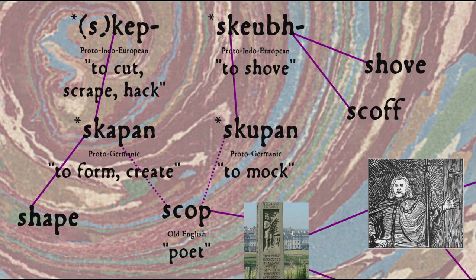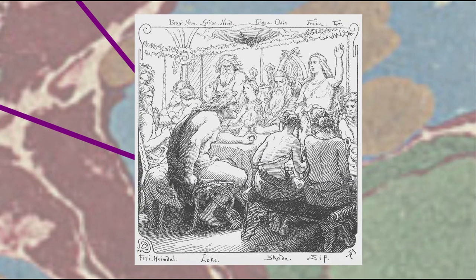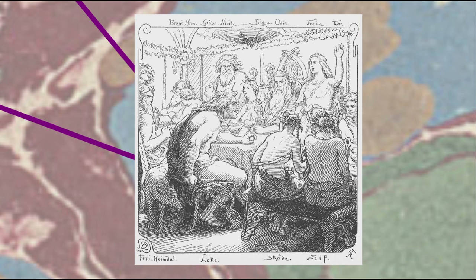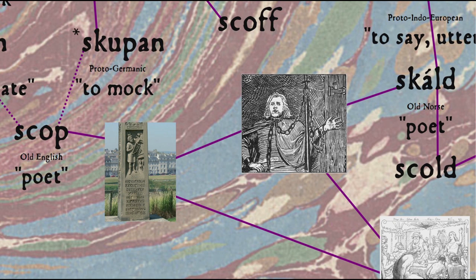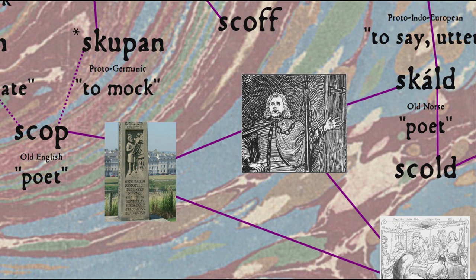And it's that second cognate that's the key here, as one of the uses of poetry in the Germanic tradition was for dishing out insults — so scoffing or mocking. We can also see this in the Old Norse word for a poet, skald, which gives us the English word scold, and comes from the Proto-Indo-European root sekwa, to say or utter. In the hands of a good shope or skald, words definitely can hurt.